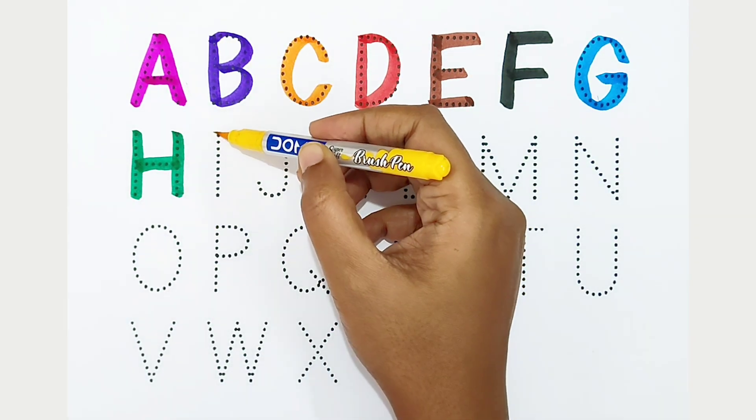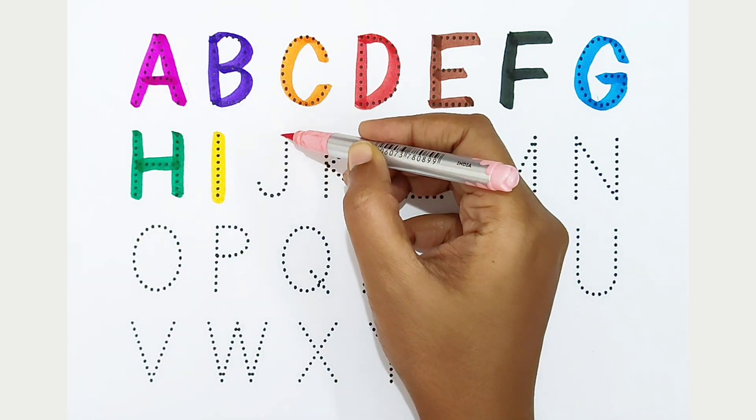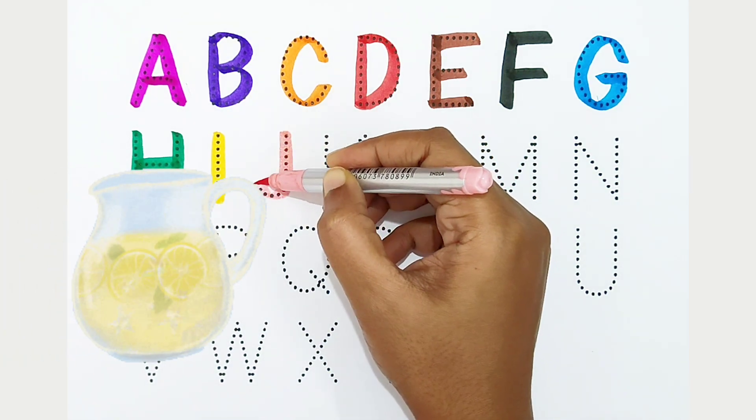I: yellow color. I is for ice. J: light pink color. J is for jug.